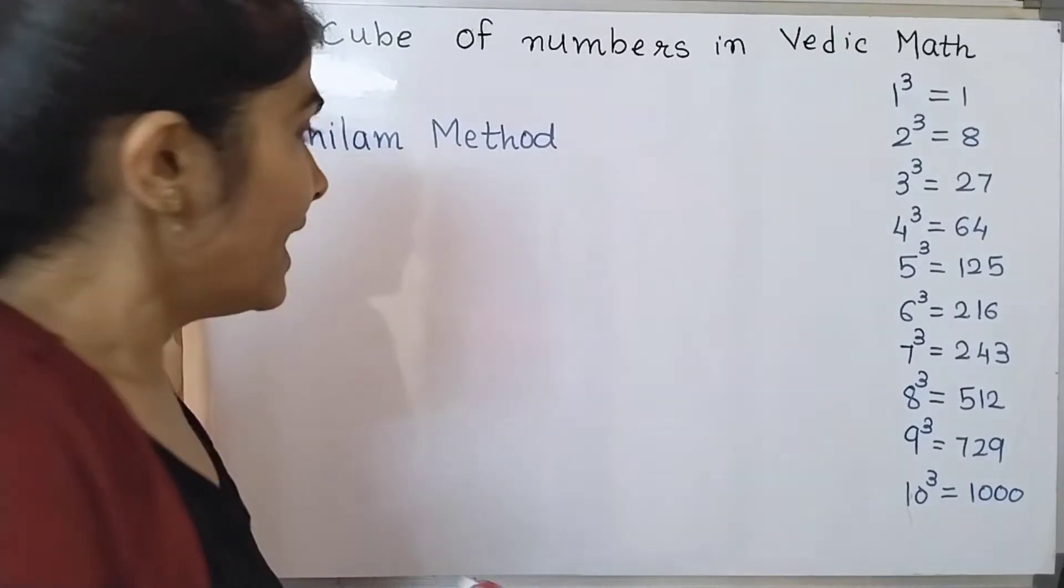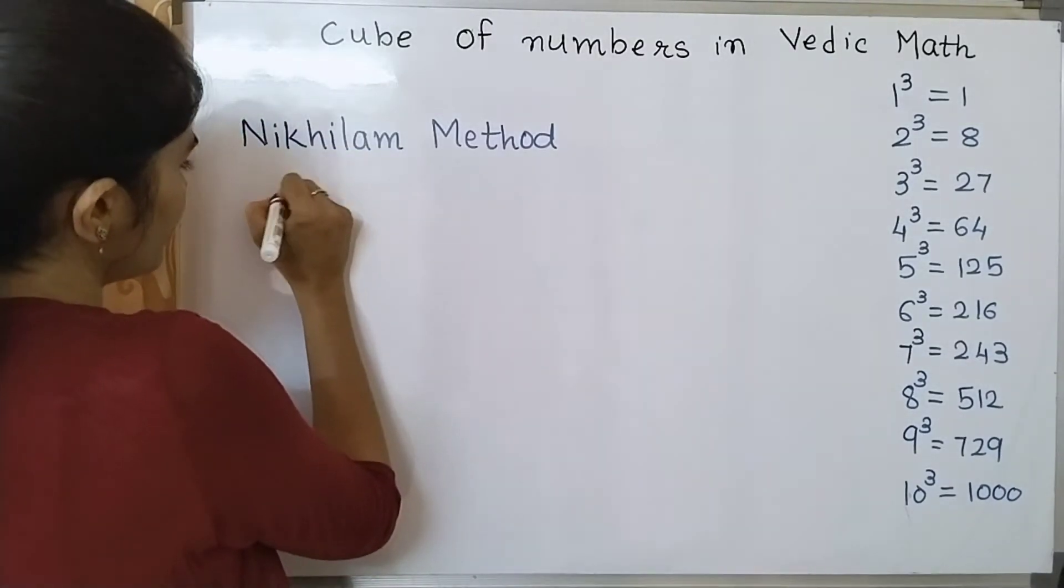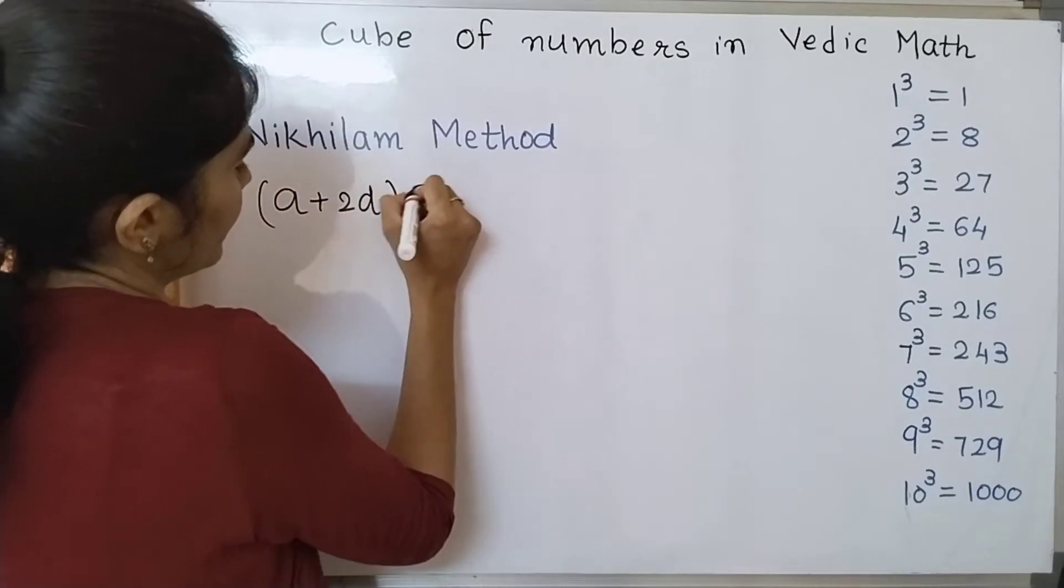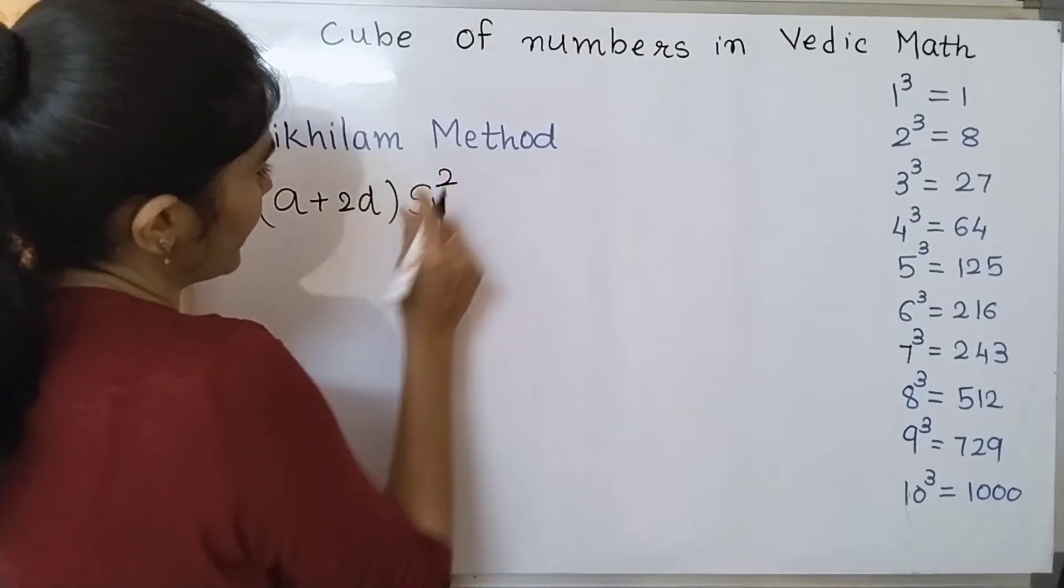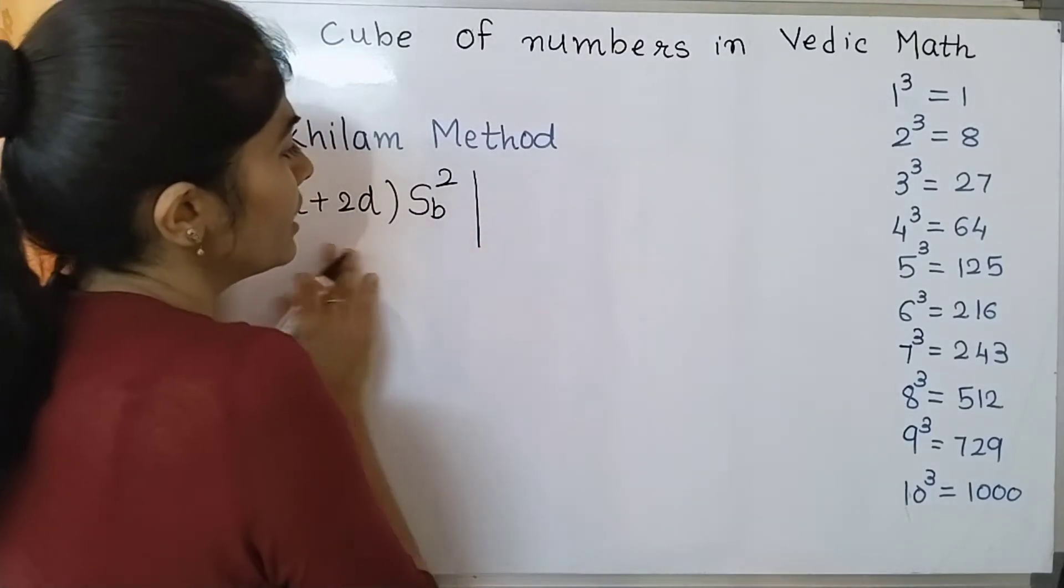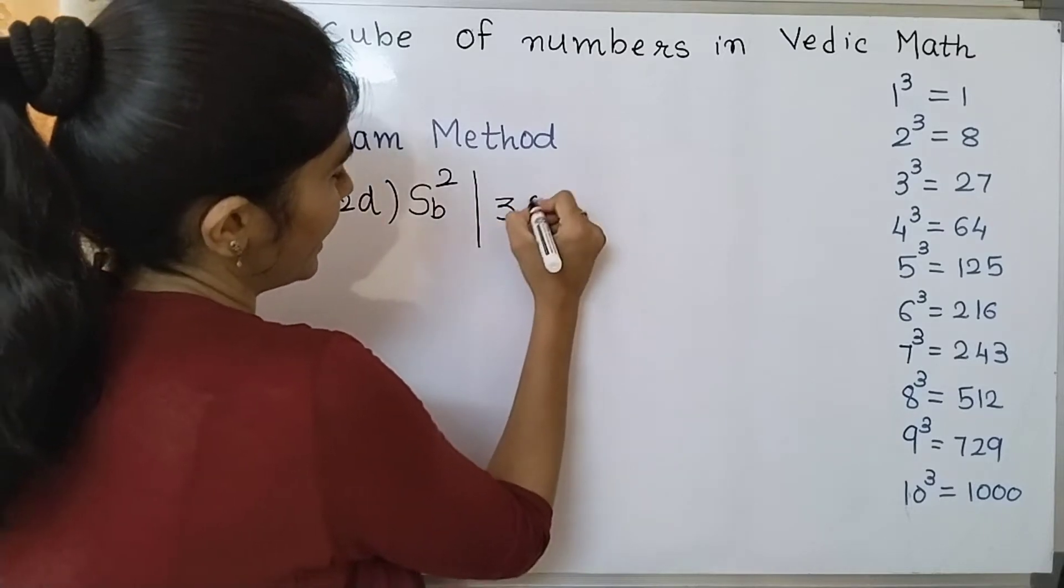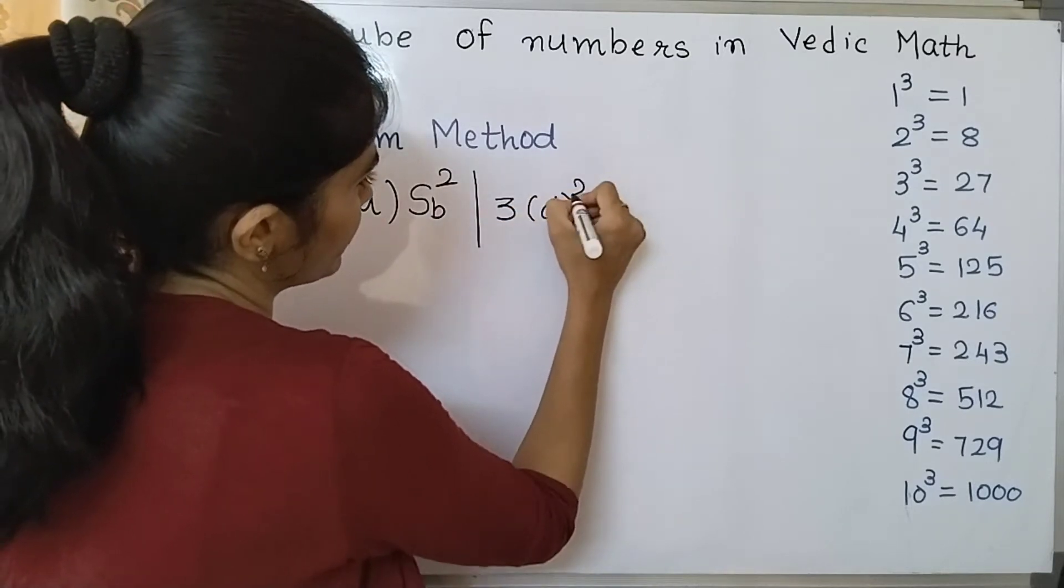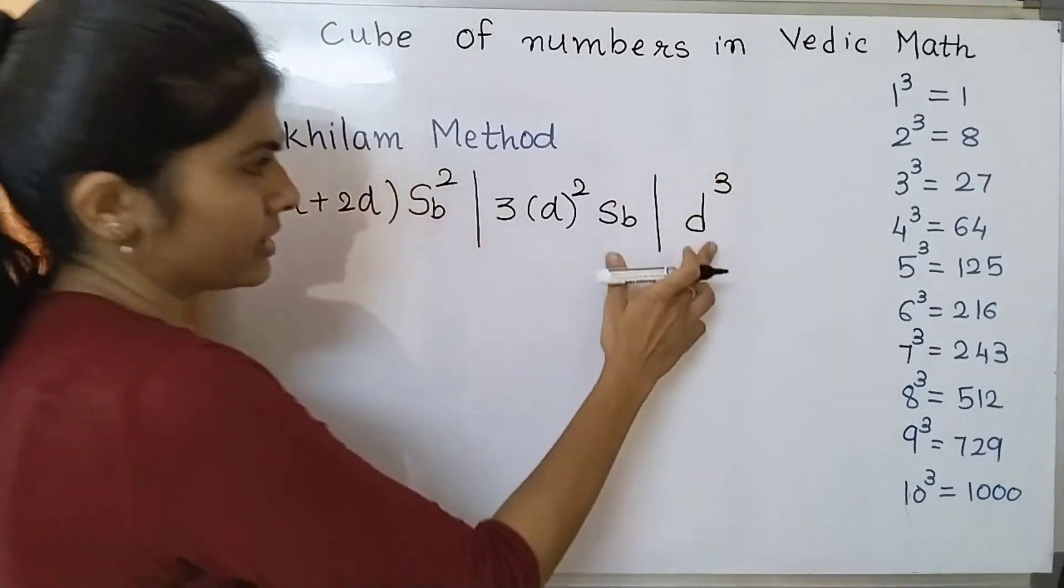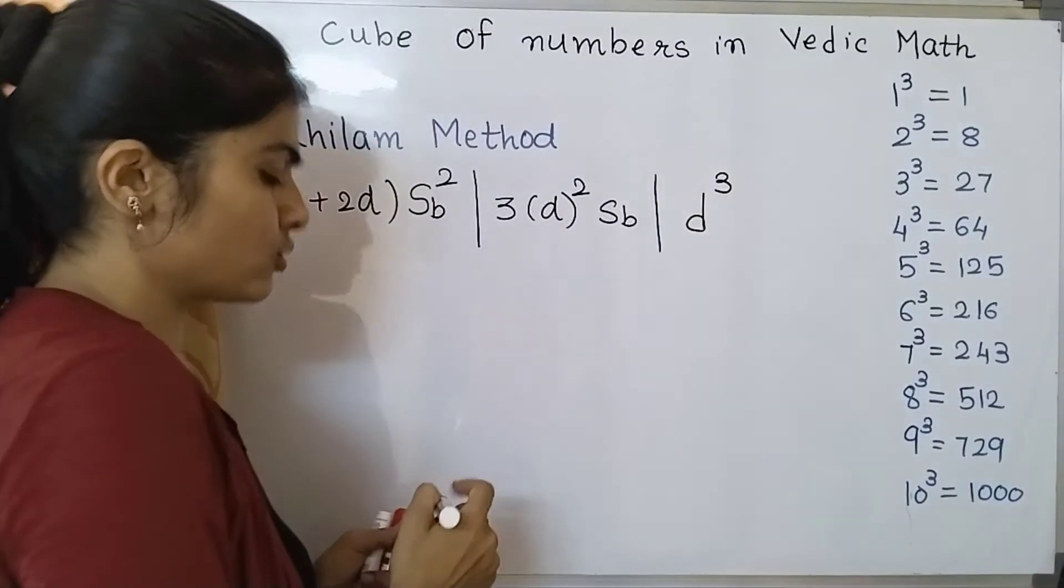So in this method we can overcome that limitation and here also we need to use one equation. Let me write that equation then I will explain you step by step what we need to do. So first one is (a + 2b) times sub base square. Now this term is a little bit new to you which is sub base, that I will explain you later on. This is my first step or first term. Second one is 3 times square of deviation times sub base, and last step is cube of the deviation. This step is similar to the Yavdanam method but these two steps are different.